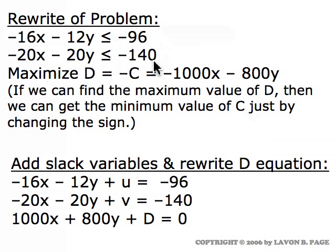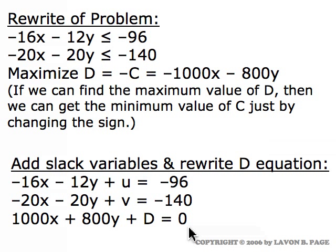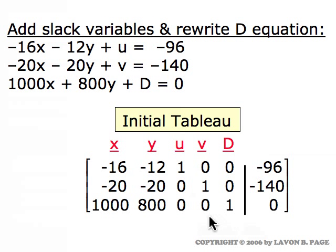After rewriting the two inequalities and replacing the cost function with its negative, we introduce slack variables U and V for the two constraints. The equation for D — that is, D equals minus one thousand X minus eight hundred Y — becomes one thousand X plus eight hundred Y plus D equals zero when terms are moved over. These modified equations form the initial simplex tableau as the augmented matrix for this system.